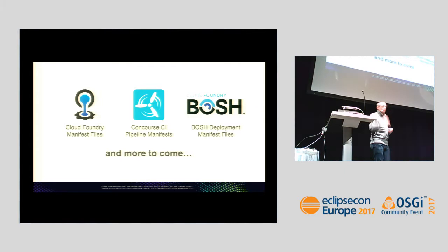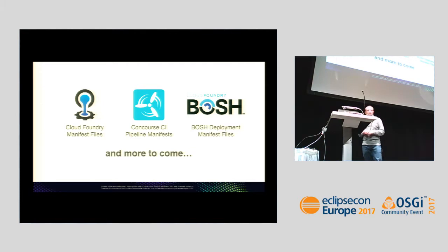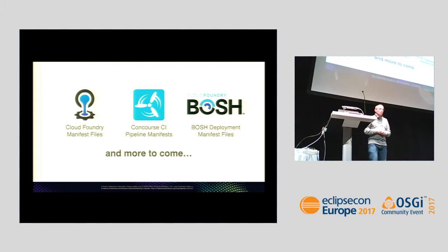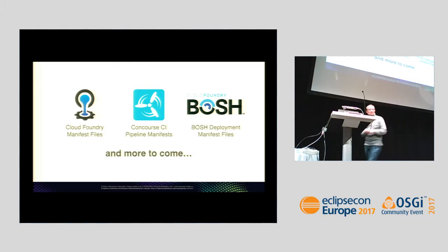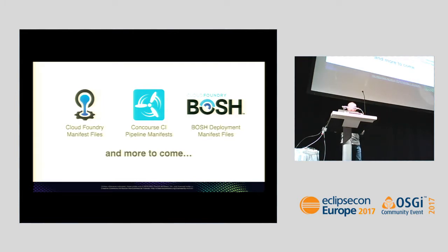We thought this might be an interesting approach going forward, and we started small. We built language servers you can already download. We implemented language servers in Java: for Cloud Foundry manifest files — a YAML dialect — for Concourse CI, a CI system like Jenkins but more advanced and Docker-based. We built the language server for Bosh, the manifest administration language for big Cloud Foundry clusters. And we're working on more.